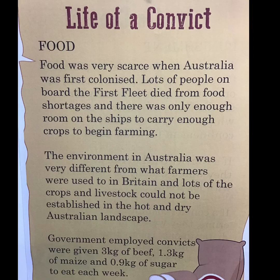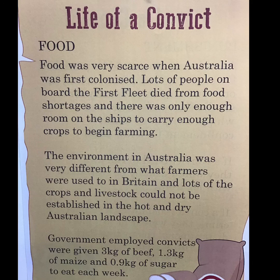Our text today is called 'Life of a Convict: Food.' Food was very scarce when Australia was first colonised. Scarce means not really available — specifically the food they were used to eating from England. Lots of people on board the First Fleet died from food shortages, and there was only enough room on the ships to carry enough crops to begin farming. Wow, so they really had not much food to eat.